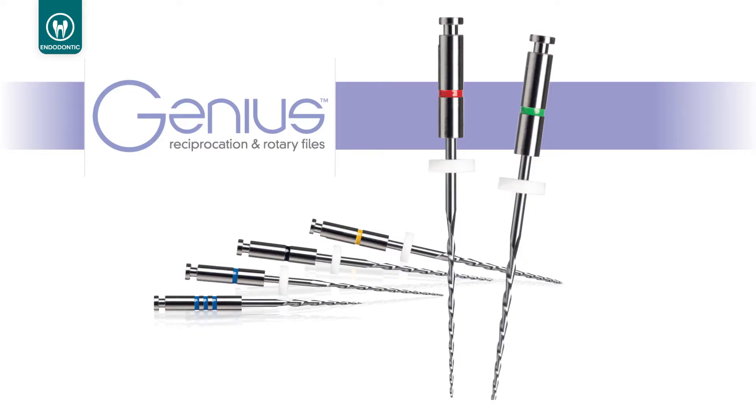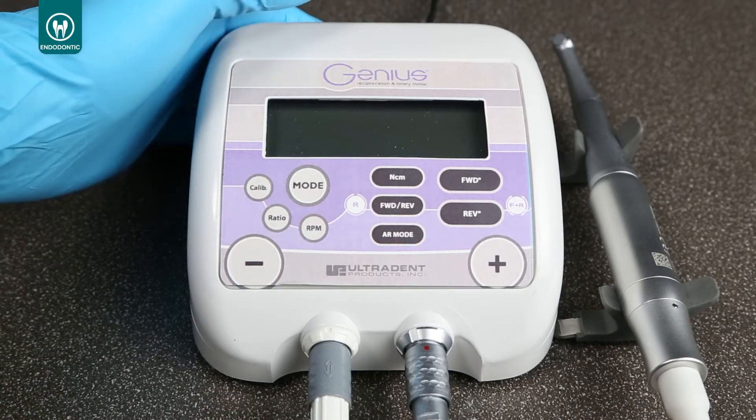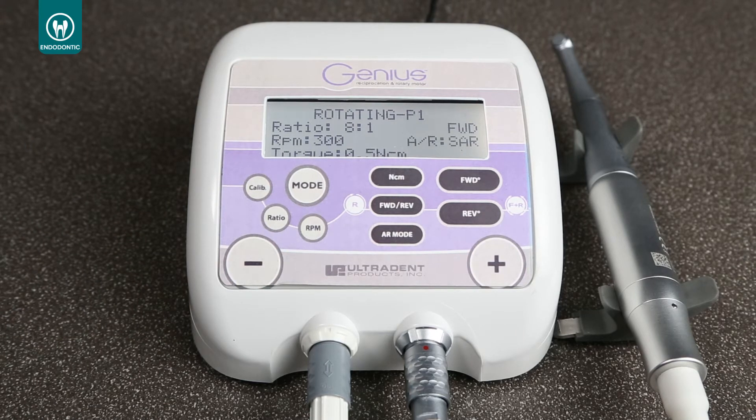Now, I want to show you the sequence of the Genius files in acrylic block. This is a Genius acrylic block made with an image of a molar inside, and this image is from a micro CT from a real molar that was reconstructed by a 3D printer. The Orifice Shaper is a 3008 file, and we use it in rotation. So first, we have to turn on the motor and be sure that it is in rotation P1.